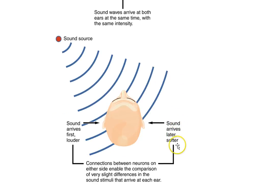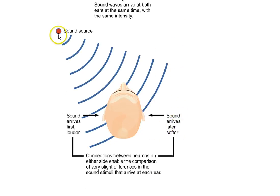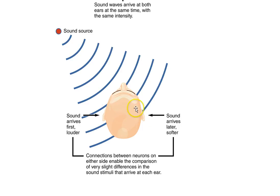Now, if the sound is at an angle from our direction — if the sound is off to the left a little bit — the sound waves are going to strike the left ear before they strike the right ear. Researchers thought the brain might be measuring the delay in activity of the two auditory receptors, and that delay would be correlated to the position of the sound in space.